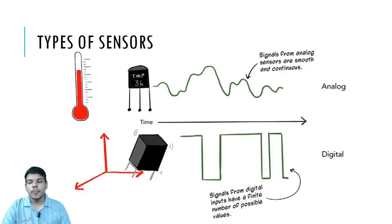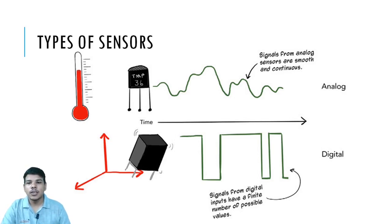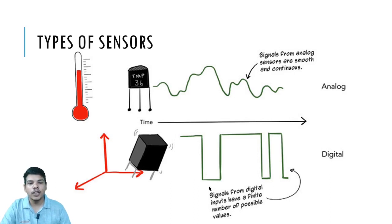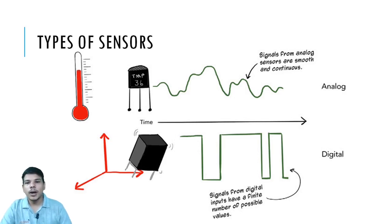There are two types of sensors: analog sensors and digital sensors. As you can see in the graph, the analog sensor varies from zero to an infinite value, but the digital sensor has a finite range — zero to one, or high or low. In digital, we use values like high or low, meaning a switch is either on or off — nothing in between.